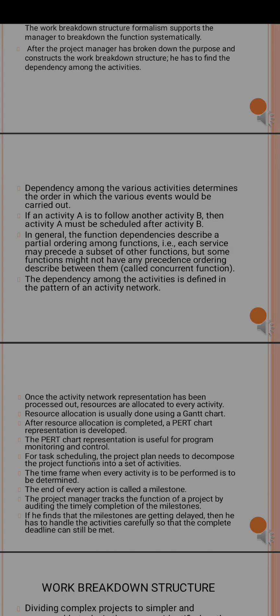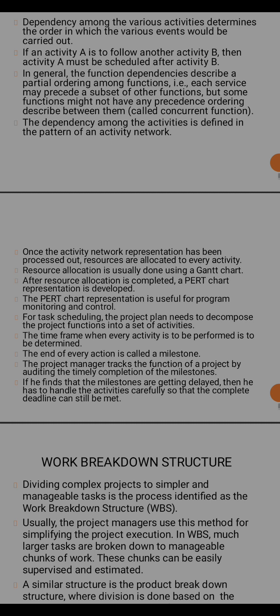The dependency among various activities is represented in an Activity Network. Once the Activity Network is defined and all activities and resources are located, the resource allocation is done using a Gantt Chart and PERT chart, which will be covered in the next video. Once resource allocation is completed, the PERT chart representation will be developed and used to monitor and control the project.